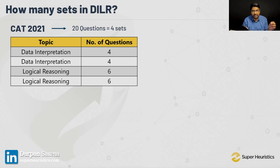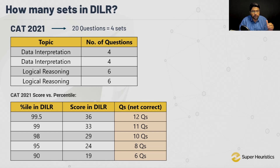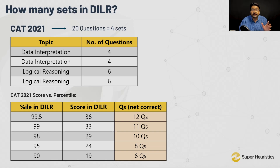Let's make the safe assumption that CAT 2022 will follow the same structure. Now, looking at the score versus percentile for the DILR section in CAT 2021: for a high 99.5 percentile, the score was 36, which effectively means 12 questions net correct. For a very graceful 95 percentile in DILR, you need a score of 24, meaning 8 questions net correct.